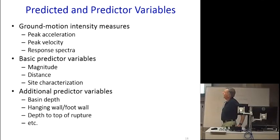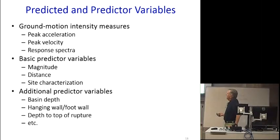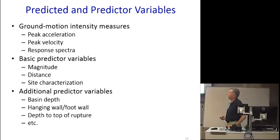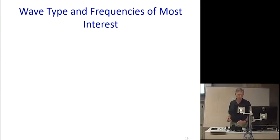The intensity measures we want to predict are generally peak velocity, peak acceleration, and response spectra. The common predictor variables are some measure of earthquake size, the distance from the earthquake to the site, and a characterization of local site geology. Additional predictor variables in modern equations include the depth or thickness of sedimentary basins, whether you're above a dipping fault like a thrust or reverse fault, and the depth to the top of the rupture.